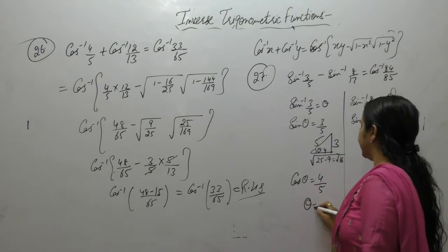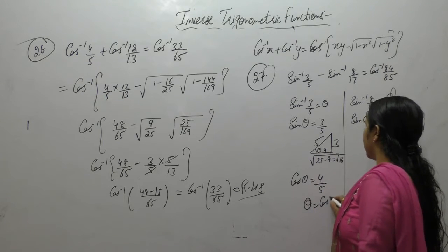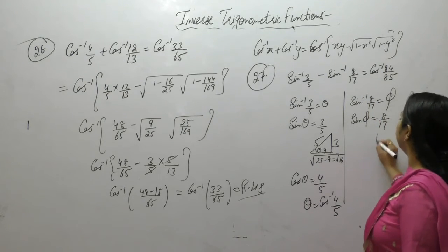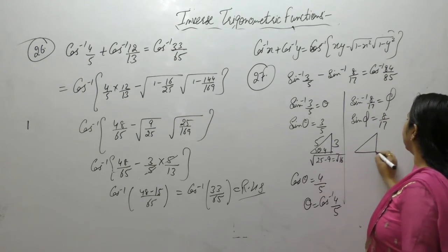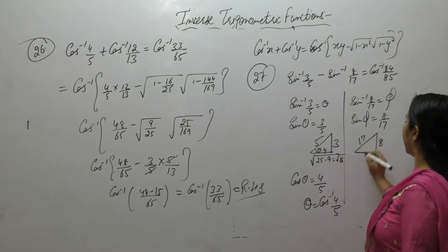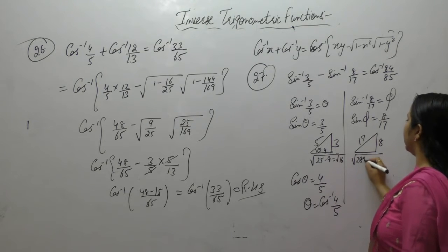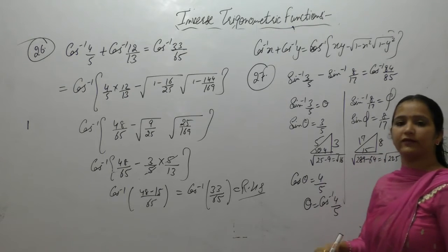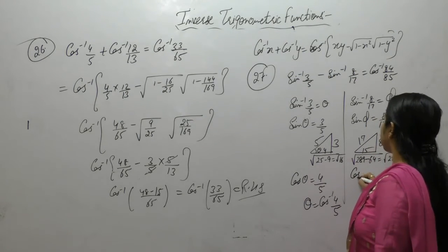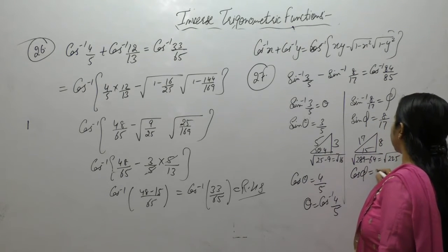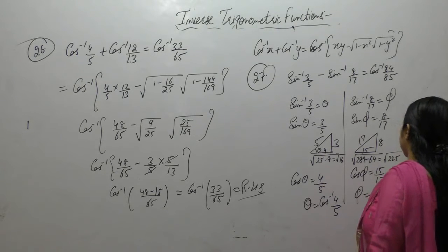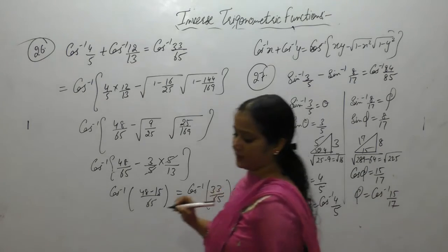We get theta as cos⁻¹(4/5). Here sine is perpendicular upon hypotenuse: √(17² - 8²). So 225, and square root of 225 is 15. Cos is base upon hypotenuse, so we get phi as cos⁻¹(15/17).